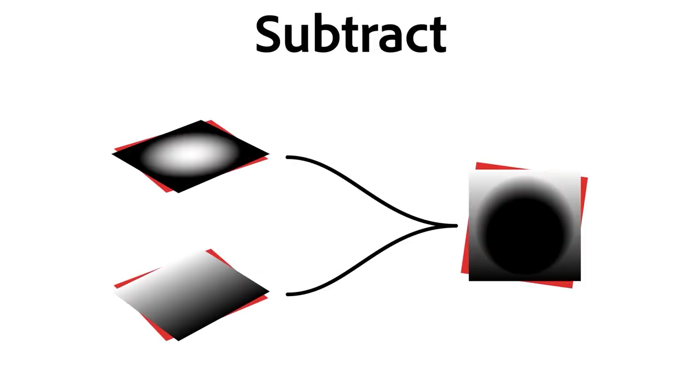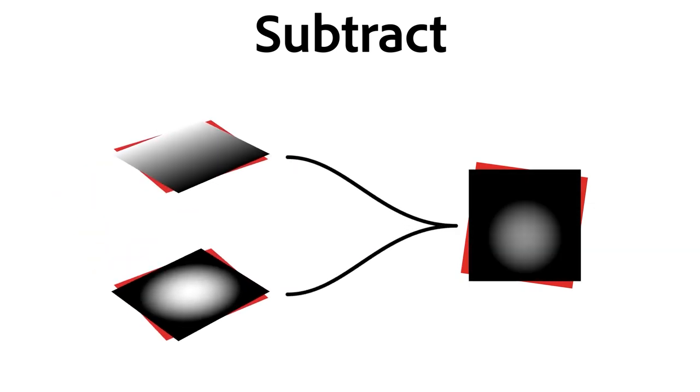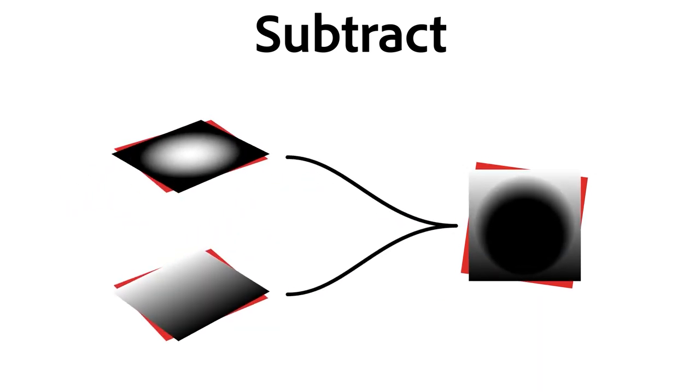Subtract is the opposite of Add. It takes away values, reducing them and making the visual result darker. Subtract is a bit harder to use because the order of your components does matter. Swapping the top and bottom component gives a completely different result. This behavior is the opposite of what Add does, and is called non-commutative.